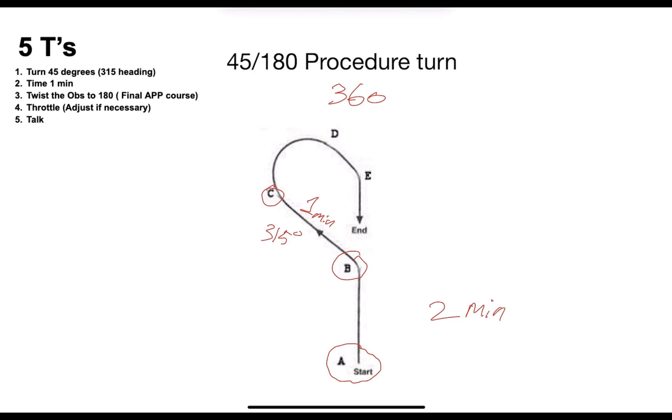We will then twist our inbound course, especially if you are doing an instrument approach procedure, to 180 degrees. And then we throttle. Now if you need to adjust your power setting because you could be losing a bit of altitude or you're not flying at the corresponding speed, make sure you do so. And talk, just let ATC know of your intentions.